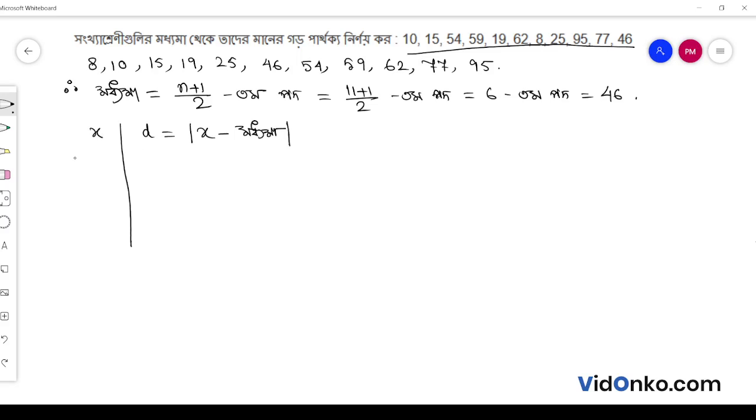The data values are: 8, 10, 15, 16, 17, 19, 25, 46, 54, 59, 62, 77, 95.